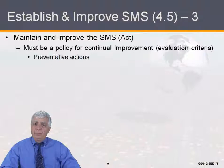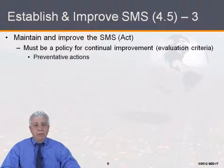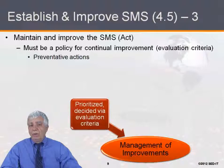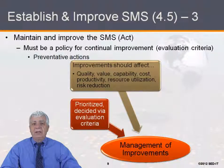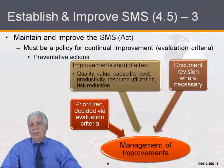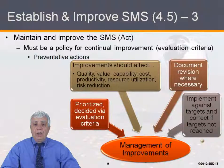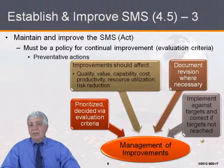We must maintain and improve the service management system. This is the part called ACT. There must be a policy for continual improvement, and that policy needs to address preventative action. As we manage improvement, we will have elements of input, priorities, and decision criteria. Improvements should affect the quality, value, and capability of the service management system. We need to document those revisions where necessary and implement them against targets, correcting those targets if they are not properly met.